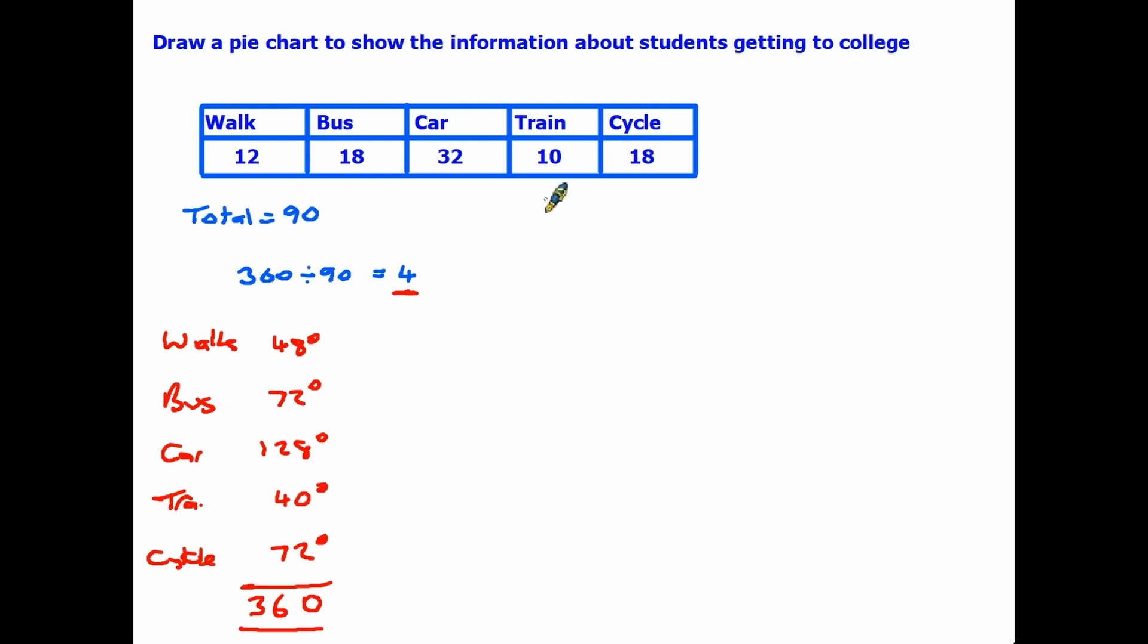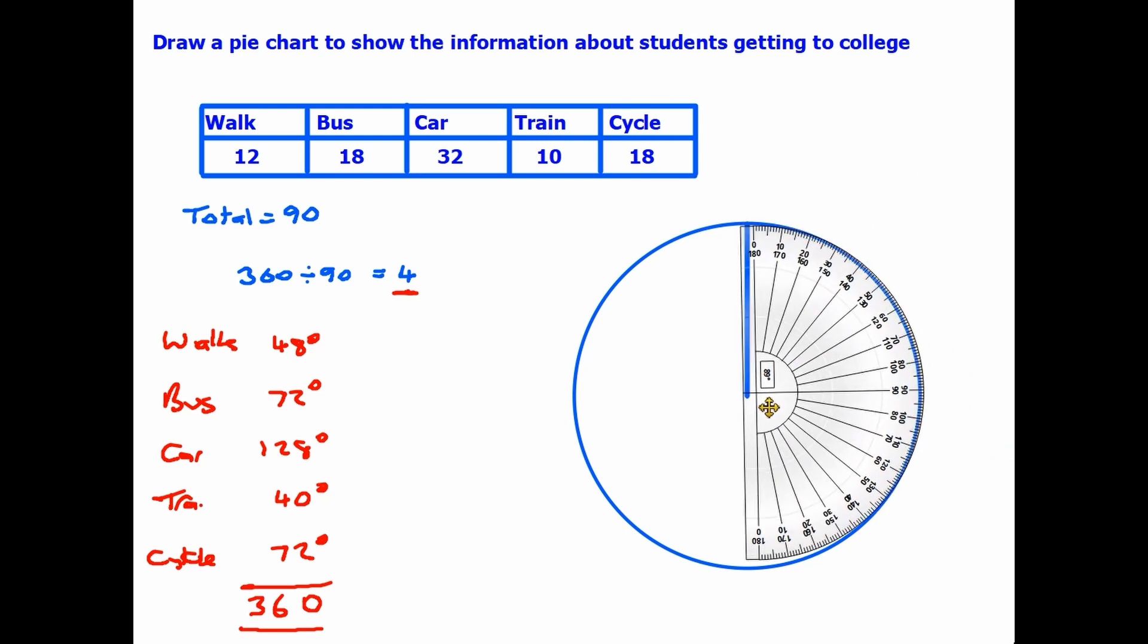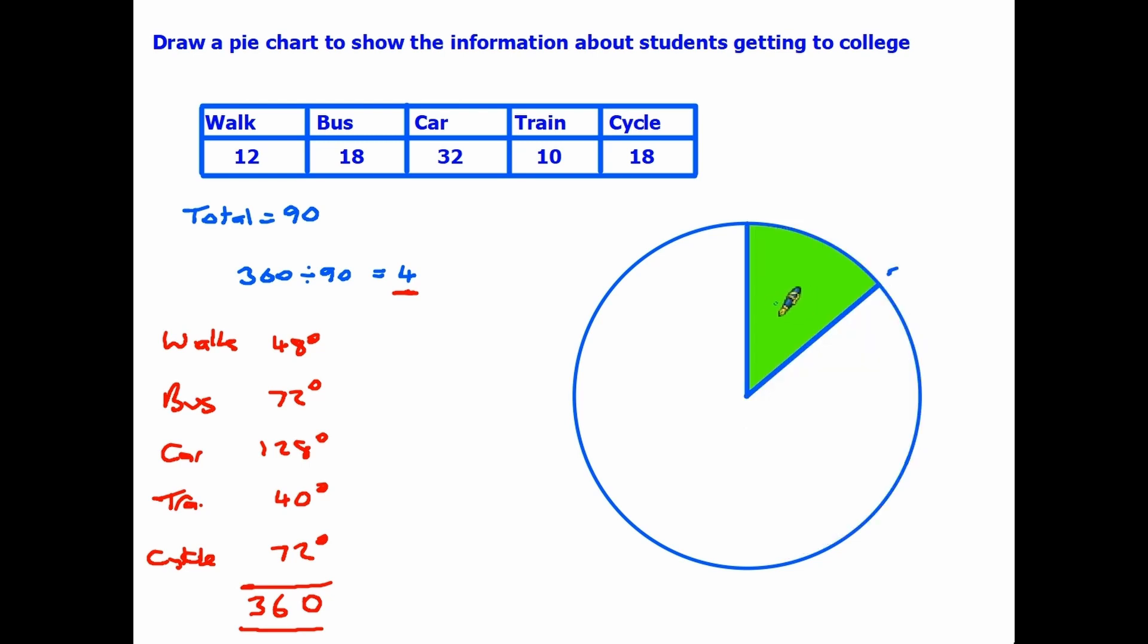So let's do this. First of all, we need our circle. You can use your protractor to draw this, and I've also, you notice, marked the center point. The easiest way to start always seems to be to start with a vertical line, really. So the first of our segments is going to start from here. The first thing we need to do is put in our walk. So using a protractor, we are going to measure 48 degrees. So this sector here is the walking, 48 degrees, and we can simply label it walking. We can then also put in here 48 degrees.